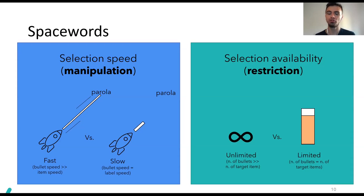We differentiate between two different strategies that we use to change the parameters of the game across conditions in order to test the impact of different degrees of orthogonal mechanics. These strategies that we used are called manipulation and restriction. Manipulation refers to the changes that we made to selection speed. So we differentiate between fast and slow bullets. And restriction refers to the changes that we made to selection availability. So we differentiate between unlimited and limited bullets.